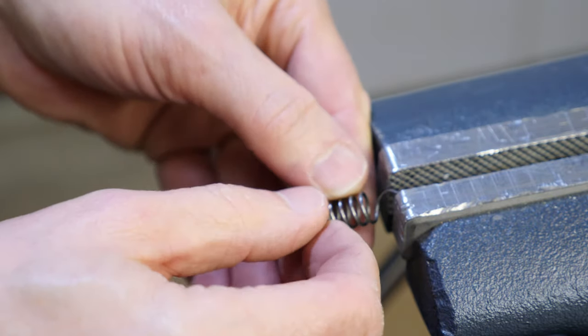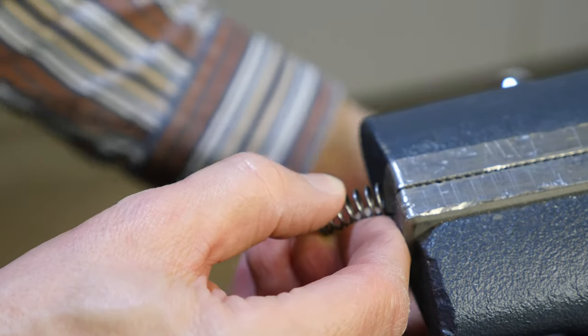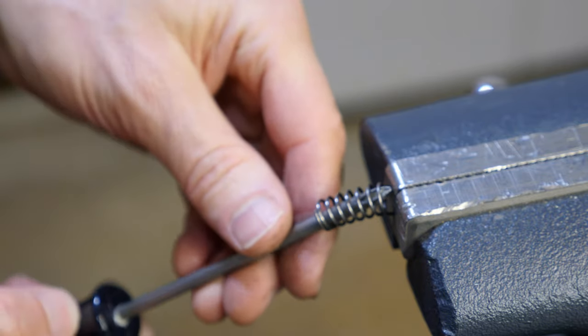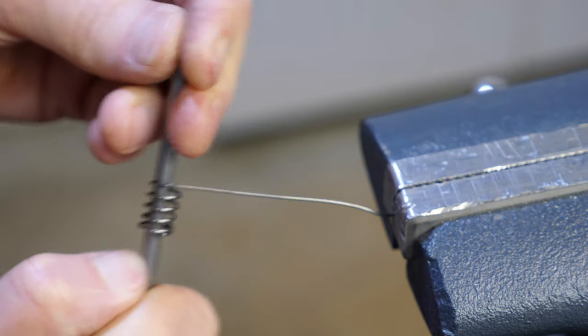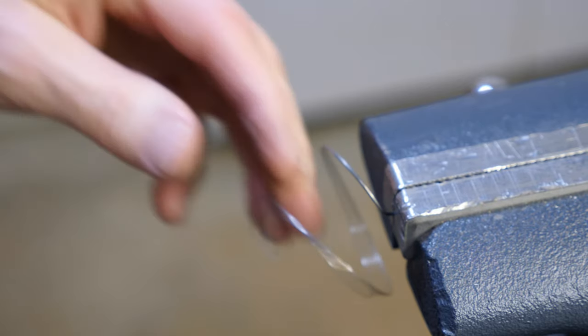Once it's clamped firmly in the vise, all I do then is I grab a screwdriver and take the shaft of the screwdriver and run that up through the spring, and then pull the spring out. And that mostly straightens it, although it will still need a bit more work.